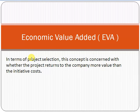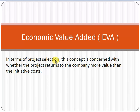What is EVA? Economic Value Added, or EVA in short, is basically a project selection method. This concept is concerned with whether the project returns the company more value than the initiative cost.